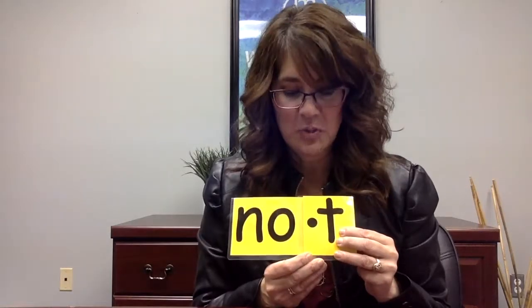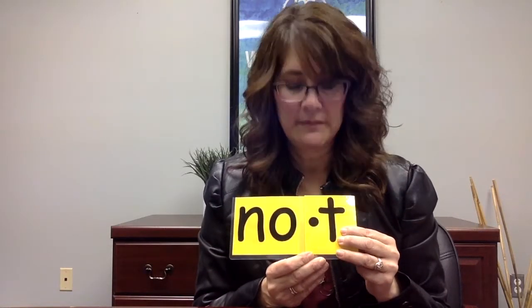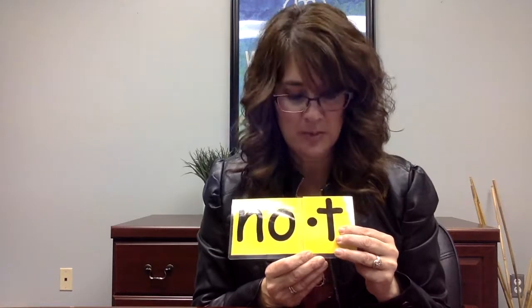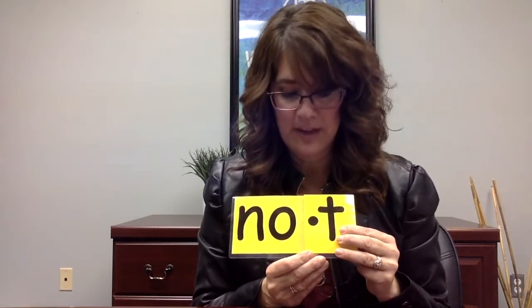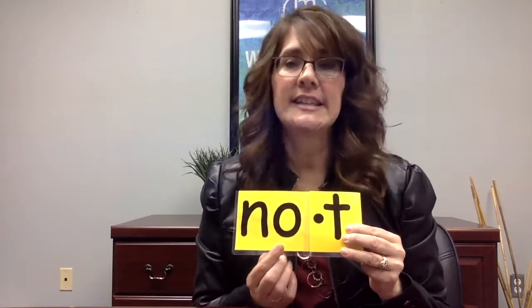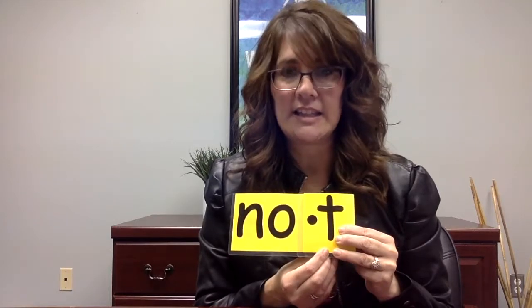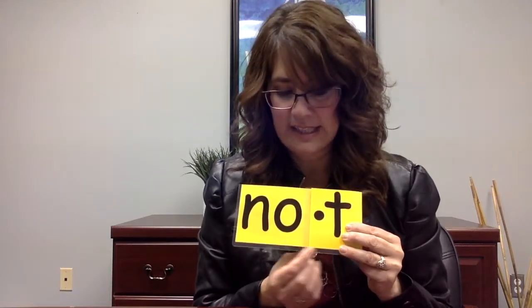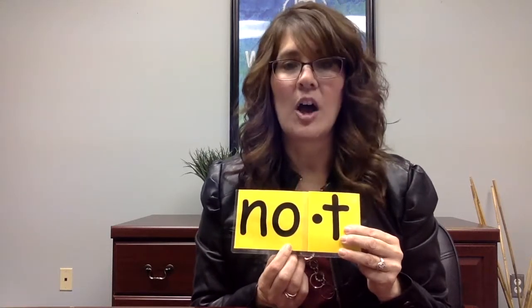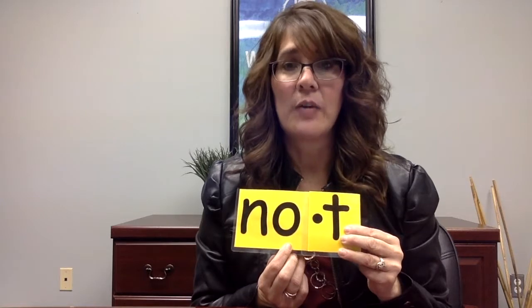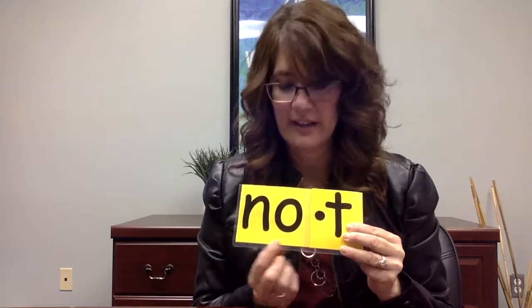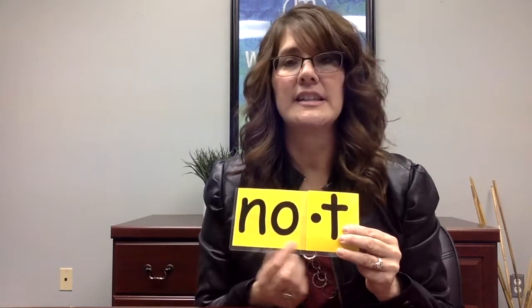We're first going to look at the two most common syllable types: closed and open. The first most common syllable type is the closed syllable, and it has a single vowel and ends in a consonant. That single vowel is always short, so in this word the vowel would say 'ah,' and the word is 'not.'